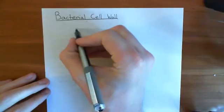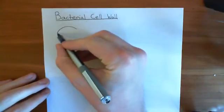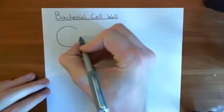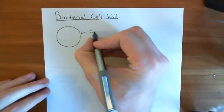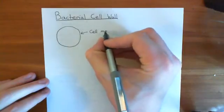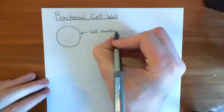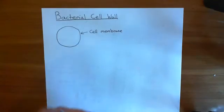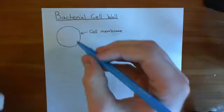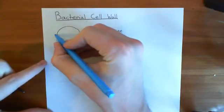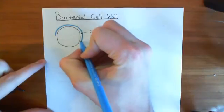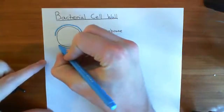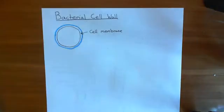Firstly, let's have a discussion about what the need for a bacterial cell wall is. Why can't we just have a bacterial cell which just has a cell membrane? Why do you need a bacterial cell wall around the cell membrane? Here's a cell membrane — what is wrong with just having a cell with a cell membrane? The bacterial cell wall goes around the cell membrane, so it's peripheral to the cell membrane. Why do you need it at all?